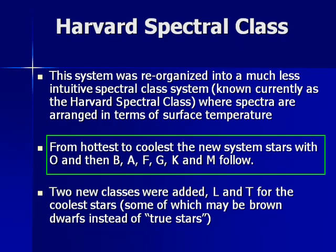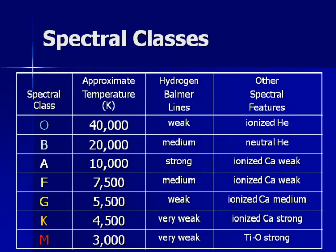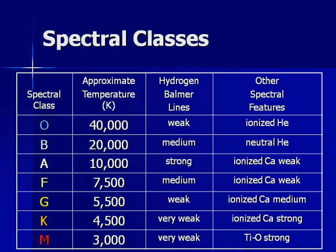The mnemonic to remember the spectral classes from hottest to coolest is O-B-A-F-G-K-M. The O-star is always the hottest — incredibly hot, incredibly rare — and they burn their hydrogen so quickly they don't last very long. Next is the B-star, a bluish-white star. A is white. F is yellow-white. G is yellow. K is orange. And M is red. With these spectral classes, the color of the star is really determined by its temperature — hotter is bluer, cooler is redder.